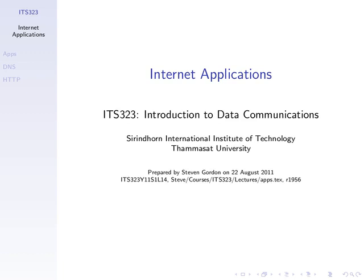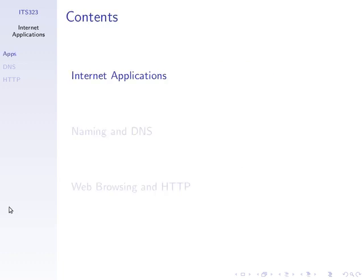This is the last topic: internet applications. We're at the topmost layer in our five-layer stack, having gone all the way from the physical layer up to the application layer. This is a short topic — we'll give one example of an internet application, briefly cover what internet applications are, discuss naming, and then go through web browsing. We'll go through this quickly because you already know about domain names and web browsing basics.